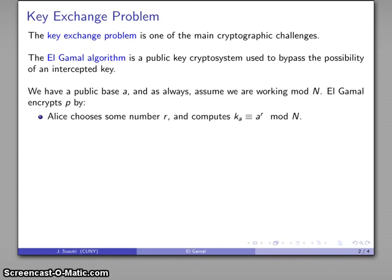So we have Alice and Bob again. Alice is going to choose some number r, doesn't really matter what number she chooses, and she's going to compute the following number. She's going to use the public base, raise it to her number, and reduce it mod N. And she's going to compute this value.